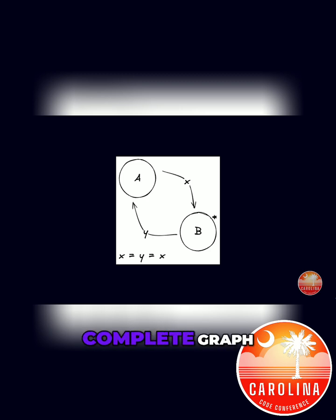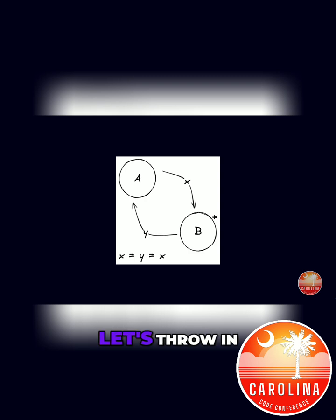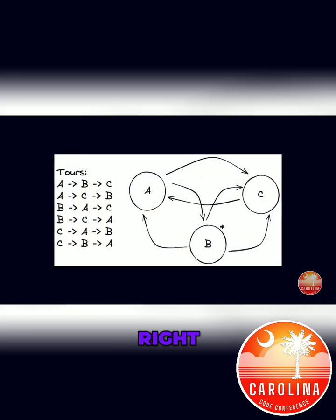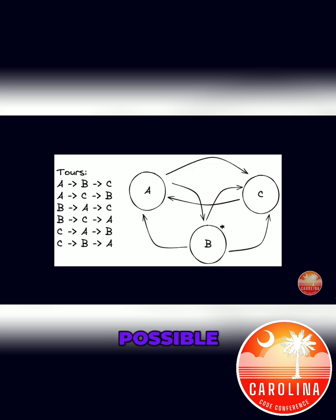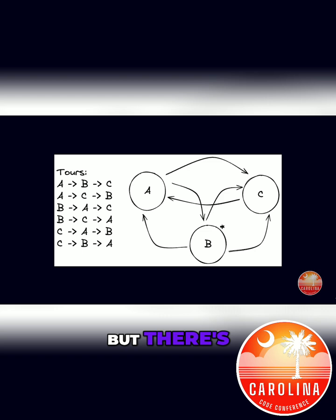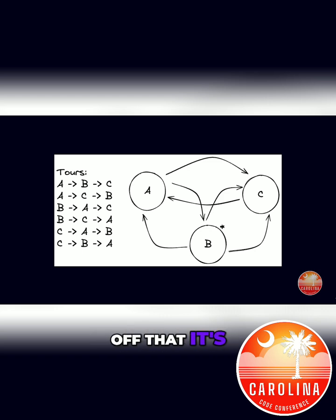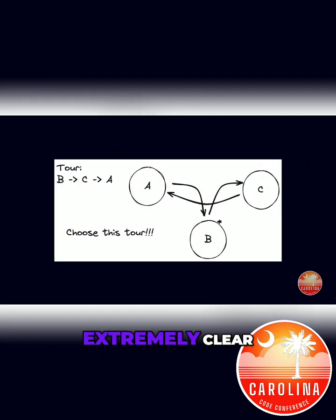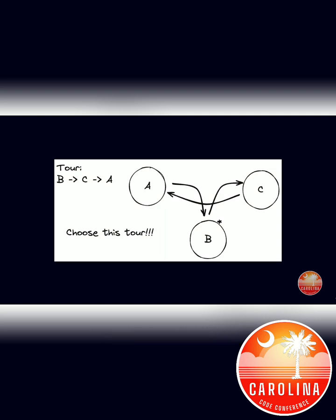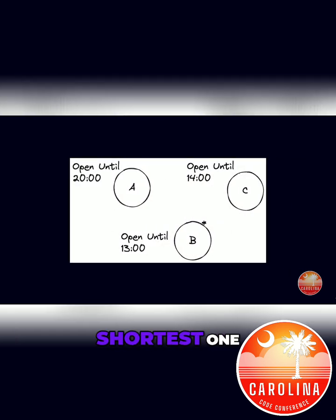You're also going to assume a complete graph. So let's throw a wild card in — let's throw in a third shack. Now you're going to have all of these different tours, all of these possible ways that you could commute between your various shacks. You're going to have all of these tours, but there's only one that you want to choose. This tips us off that it's an optimization problem. It's extremely clear that this is the tour that we're going to choose, since it's the shortest one.